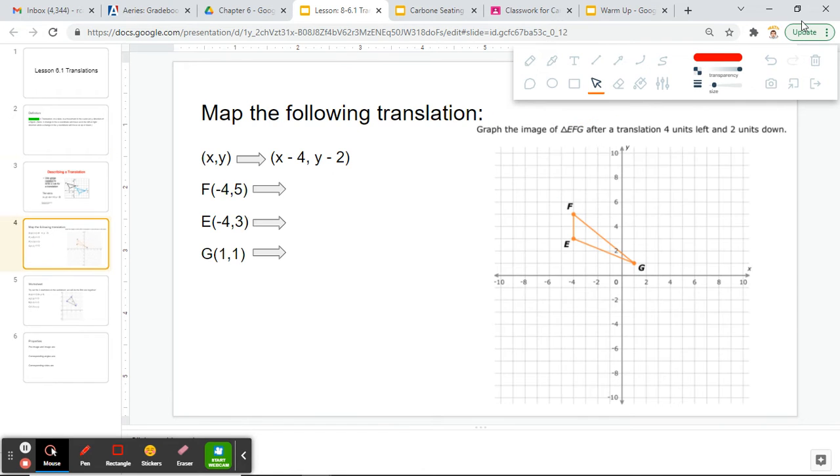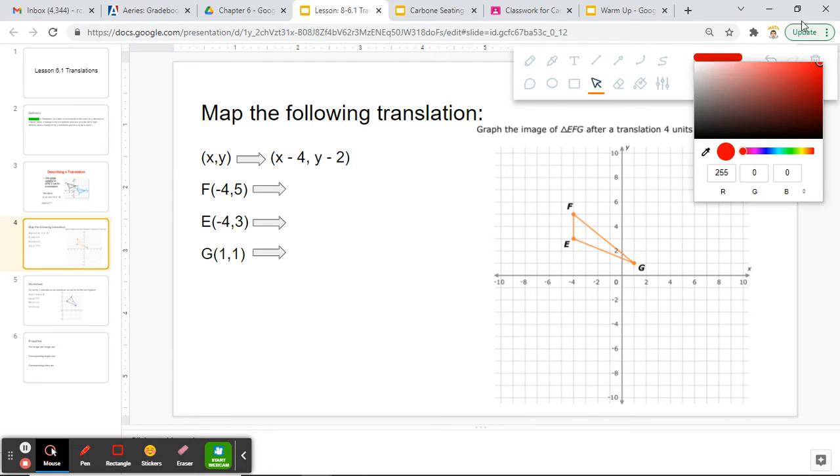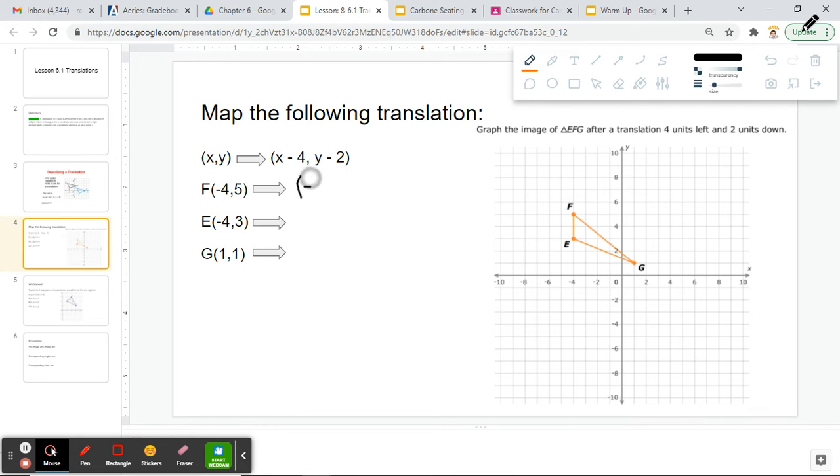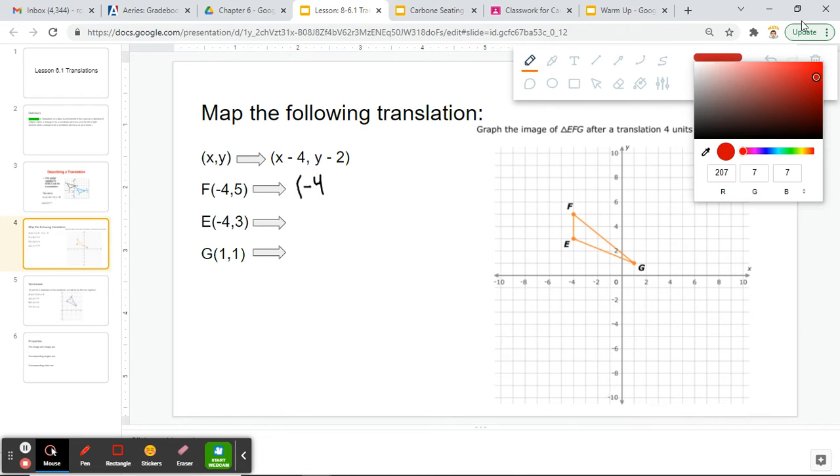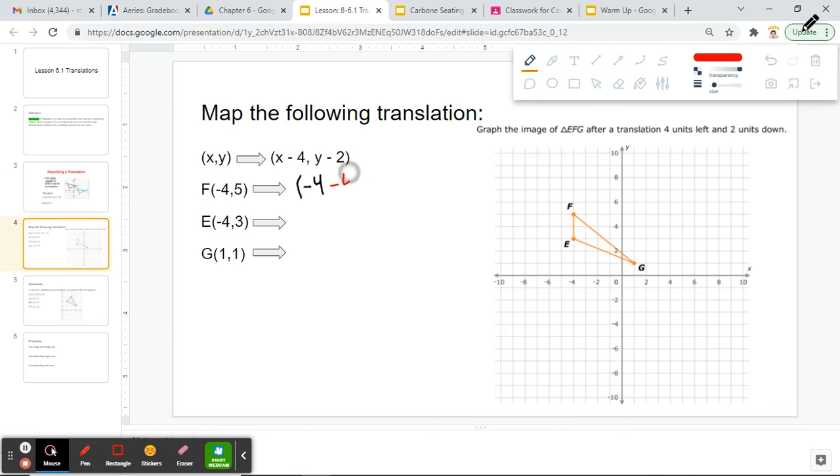However, there's another way we can do this. We could do this by simply working with our coordinates. Let's take our coordinates in the form (x, y) and map them to (x - 4, y - 2). I have to take my original x-coordinate, which for F is negative 4, and then I am going to subtract 4.